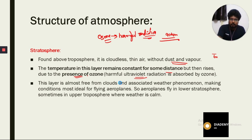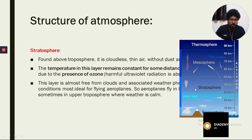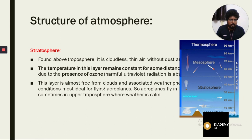Looking at this diagram, we can see the troposphere first, with an average height of 13 kilometers. After that comes the stratosphere, where the ozone layer is present. Then we have the mesosphere, and after that the thermosphere. All flights fly in the stratosphere.